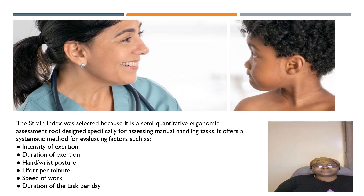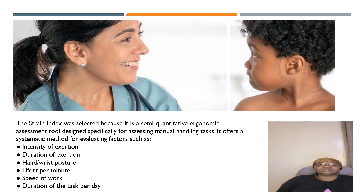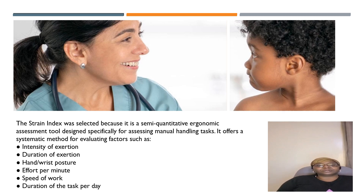My name is Eveline and I'm presenting part of the assignment. In this assignment, we chose the strain index because it is a systematic quantitative ergonomic assessment tool specially designed for assessing manual handling tasks. It offers a systematic method of evaluating variables such as intensity of exertion, duration of exertion, hand/wrist posture, effort per minute, speed of work, and duration of the task per day.